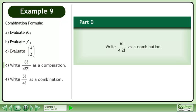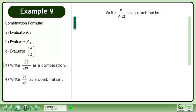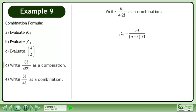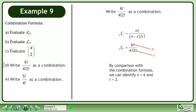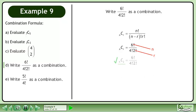In Part D, write 6 factorial over 4 factorial times 2 factorial as a combination. Write the combination formula. Rewrite the expression on the right side. By comparison with the combination formula, we can identify n equals 6 and r equals 2. The answer is 6 choose 2.